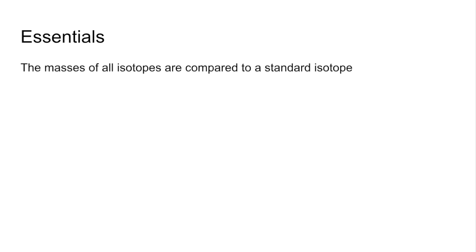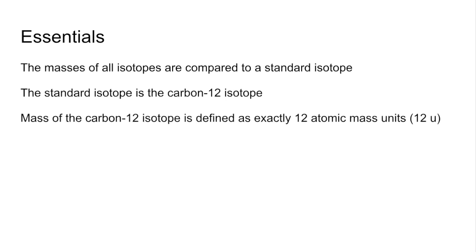Some essentials then: the masses of all isotopes are compared to a standard isotope, and the standard isotope is the carbon-12 isotope. The mass of the carbon-12 isotope is defined exactly as 12 atomic mass units or 12u, so therefore a twelfth of that is going to be one atomic mass unit.